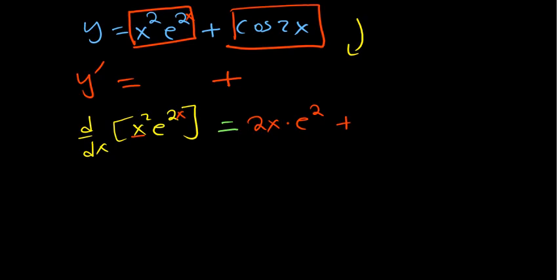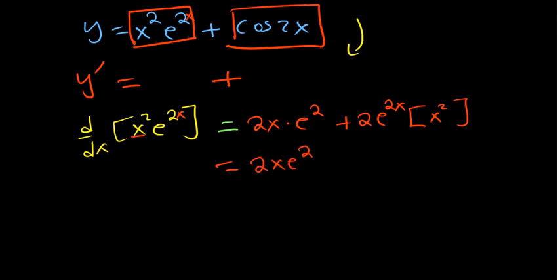The derivative of the exponent 2x is just 2, so the derivative of e to the power 2x is 2 times e to the power 2x — as we already talked about with derivatives of exponentials. Multiplying by the original first part x squared, the product rule gives us: 2x times e to the power 2x plus 2 times e to the power 2x times x squared. So that's our first part's derivative.